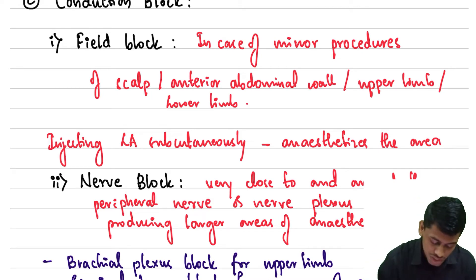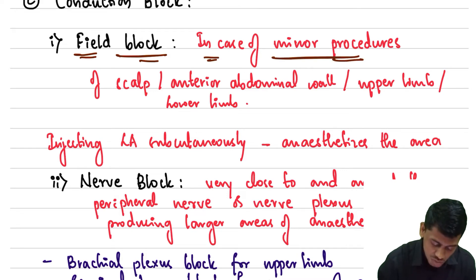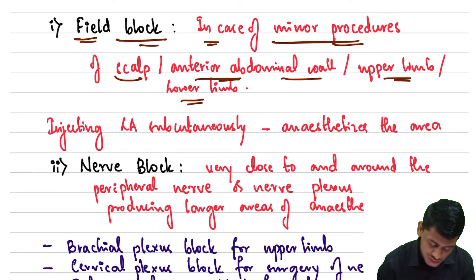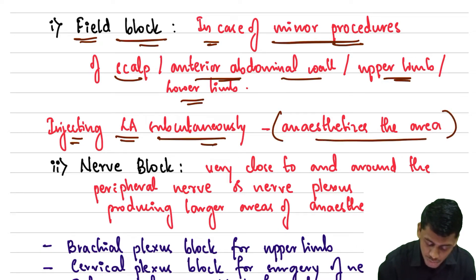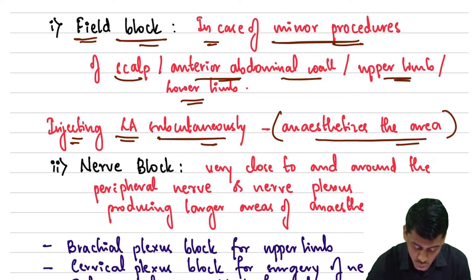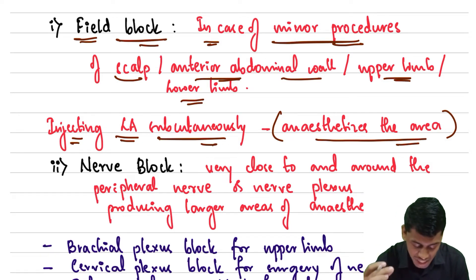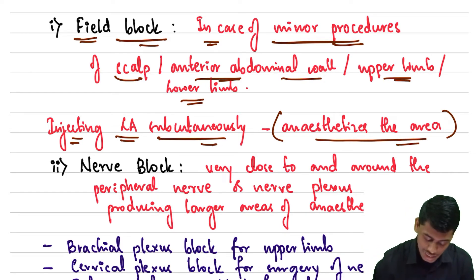Moving on to conduction block — the first type is the field block. Field block is used for minor procedures of the scalp, anterior abdominal wall, upper limb, and lower limb. In this technique, we inject the local anesthetic subcutaneously to anesthetize the given area.